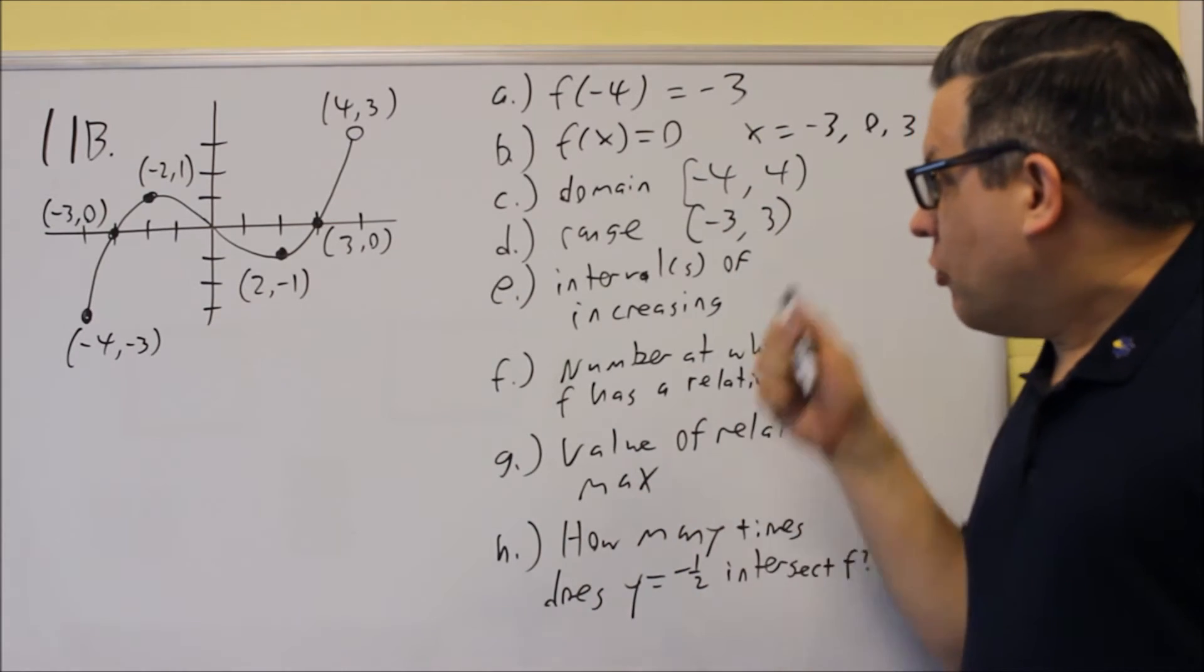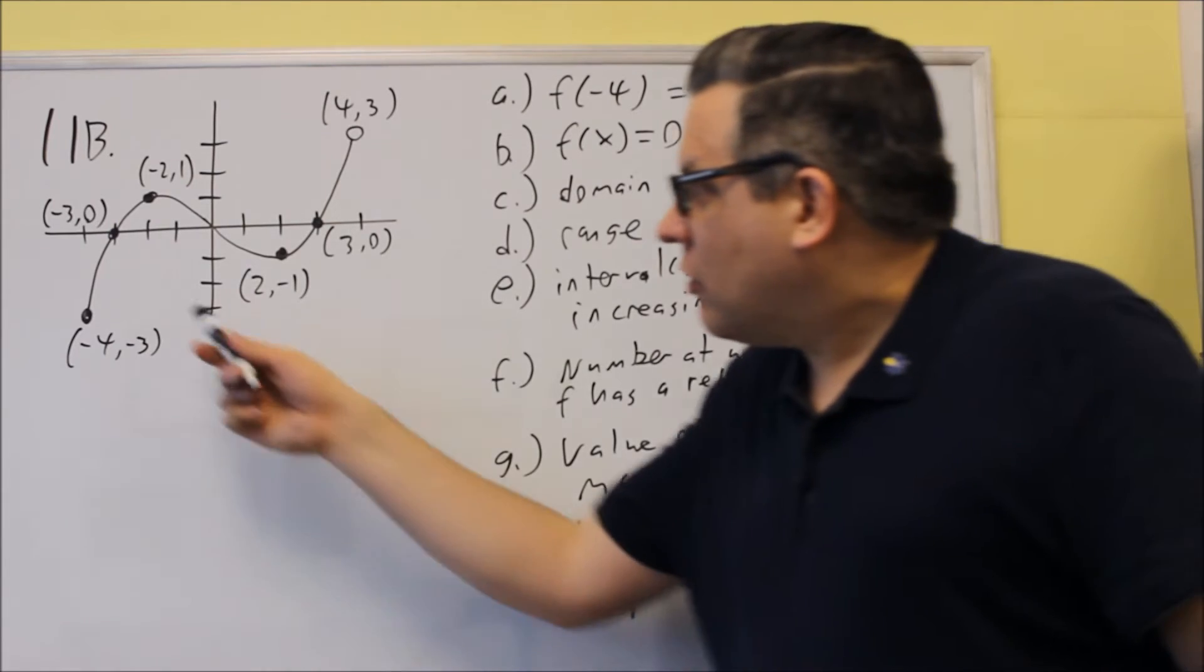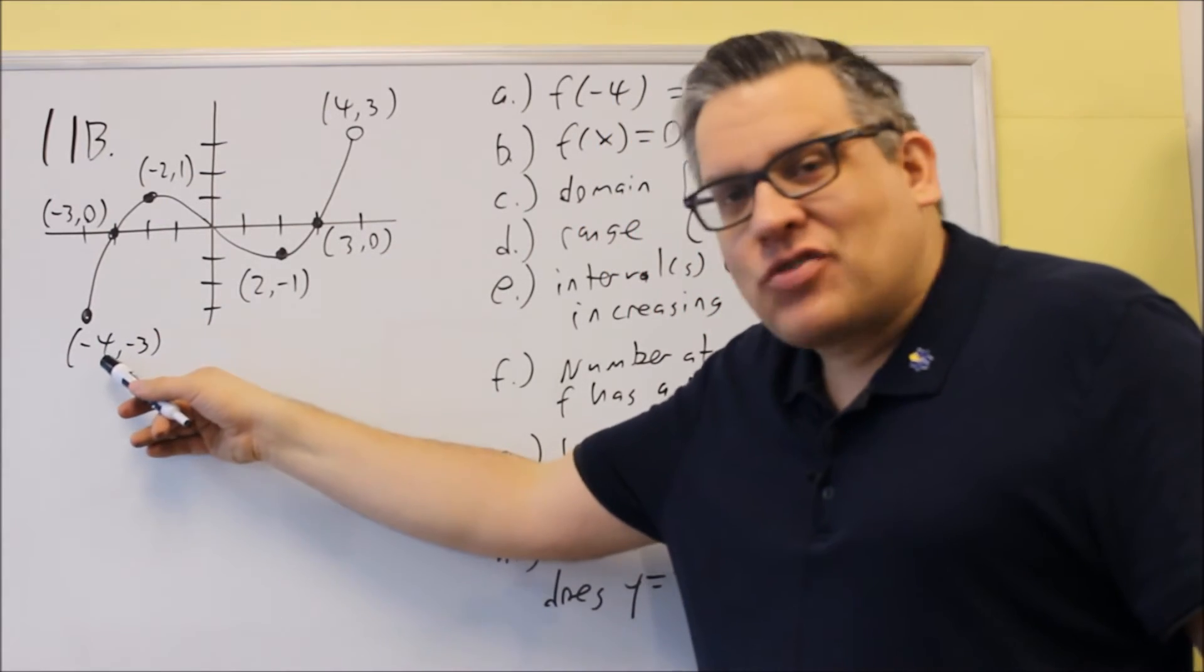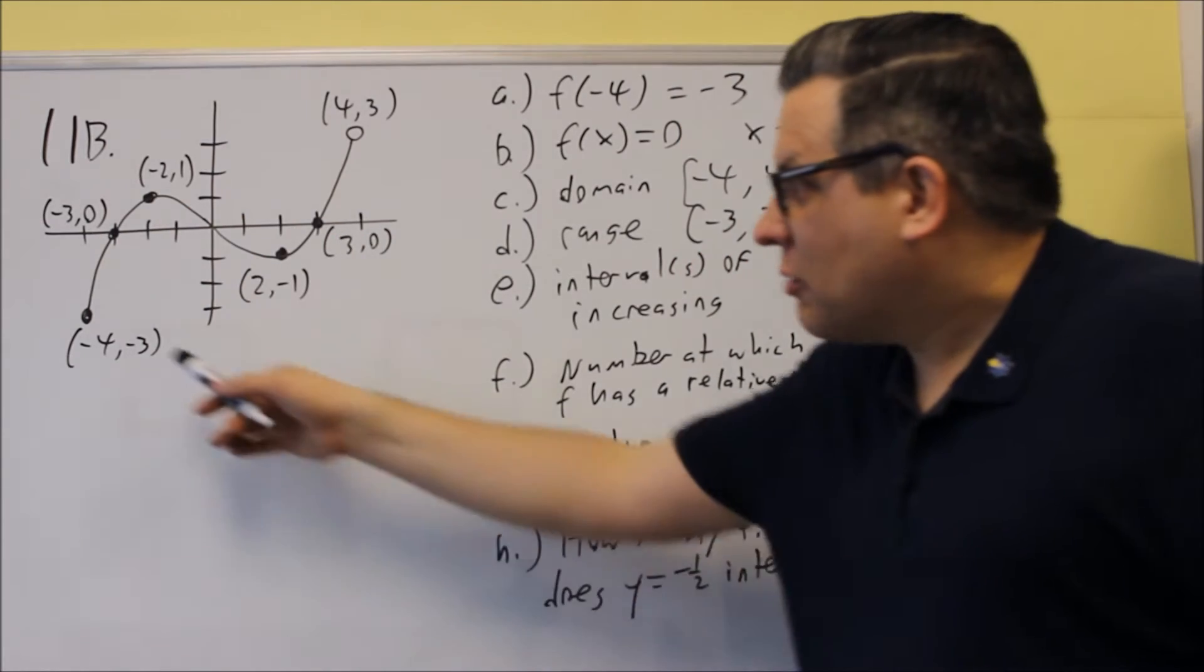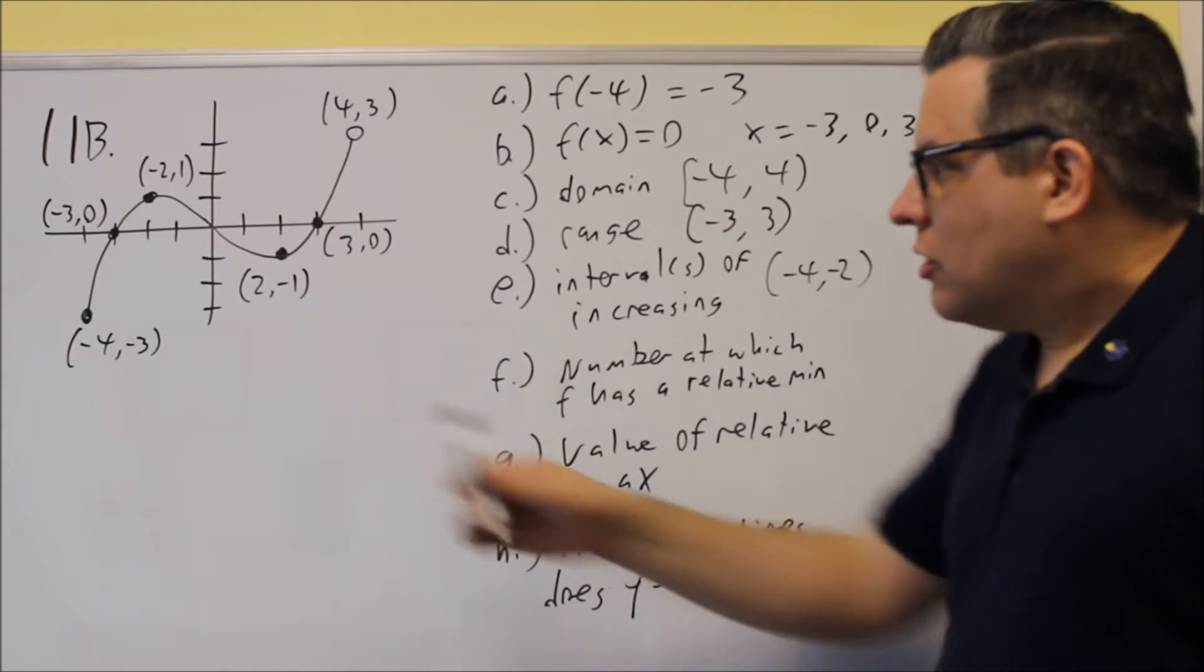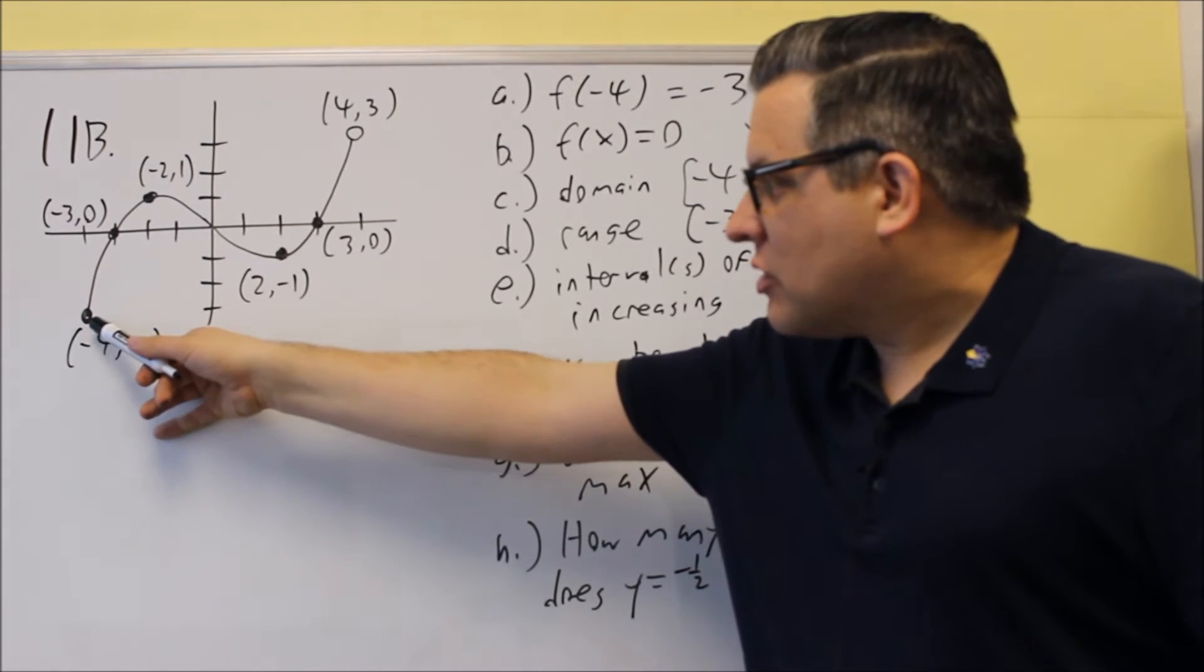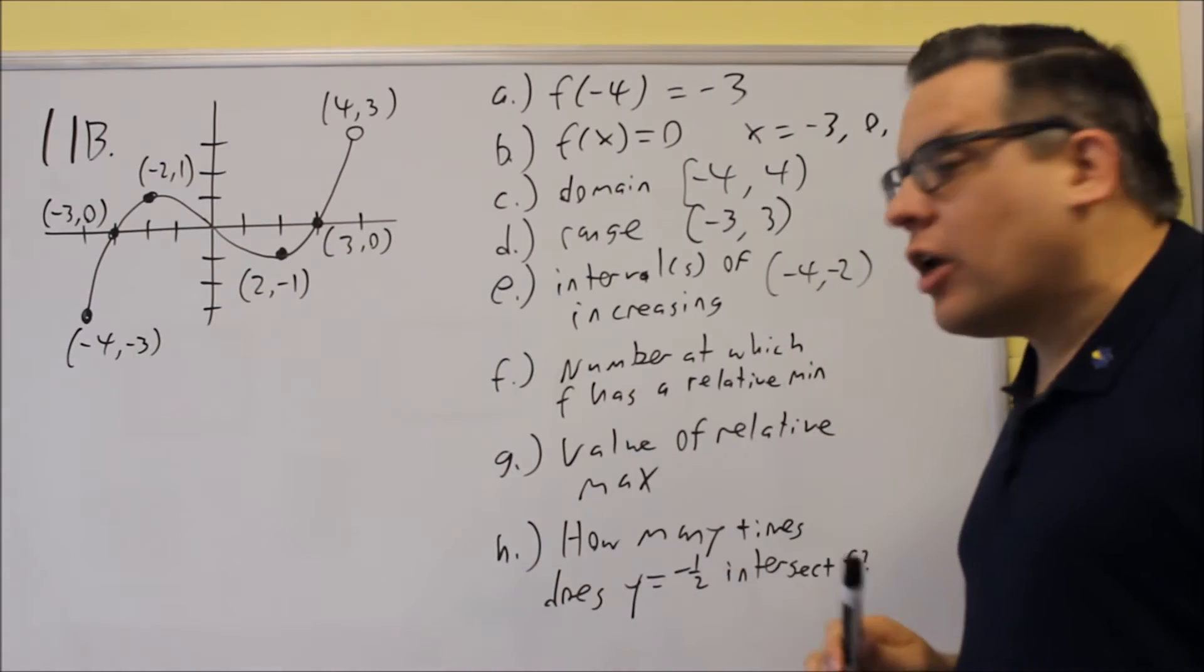Okay, so again, when we use intervals of increasing or decreasing, we're using parentheses on all those. You're starting with looking at the x value where it starts going uphill, and the x value where it stops going uphill. So it's going to be between -4 and -2. So at that x value, it starts going uphill. At that x value, it stops. You're only using x values when you write your answer.